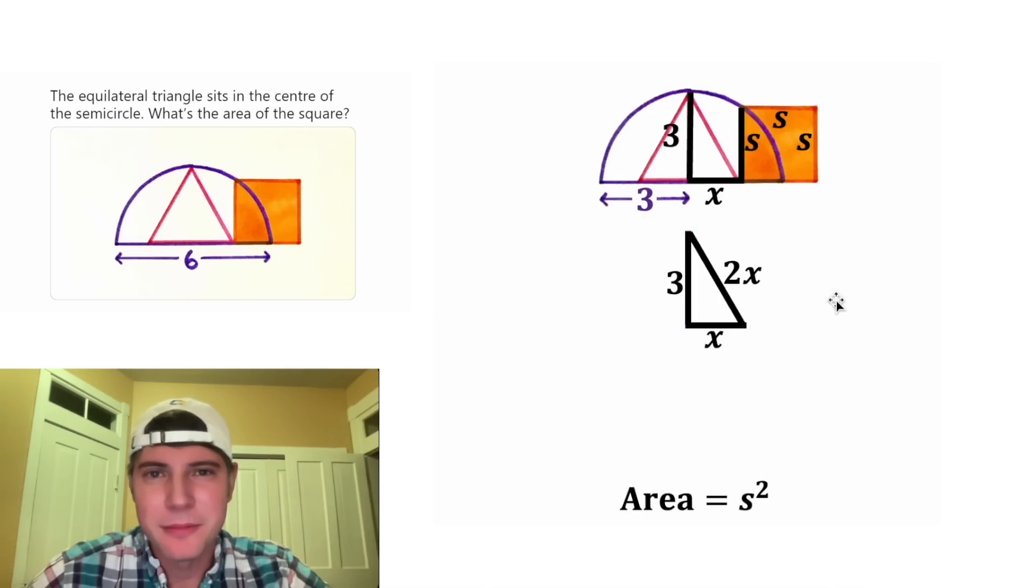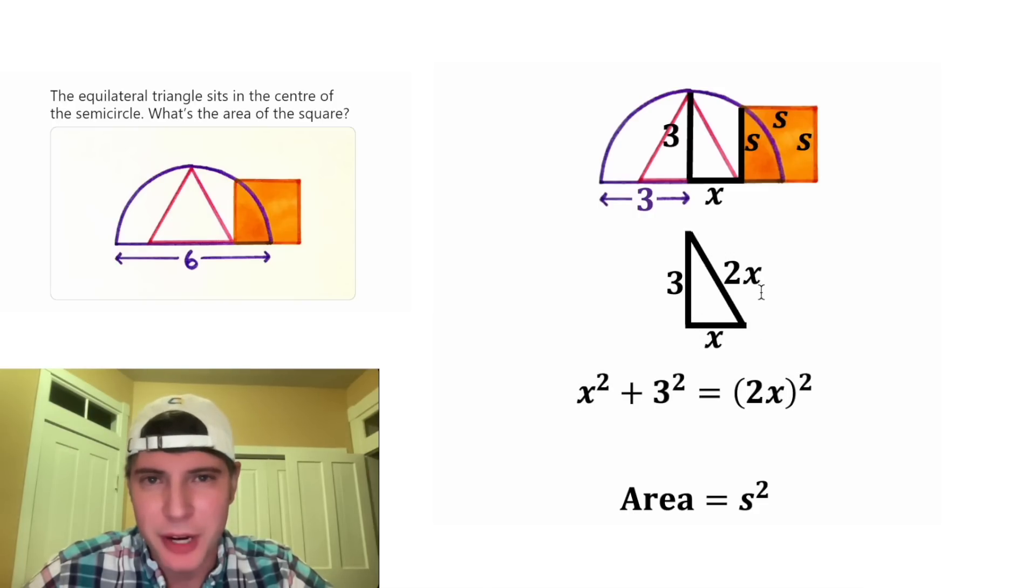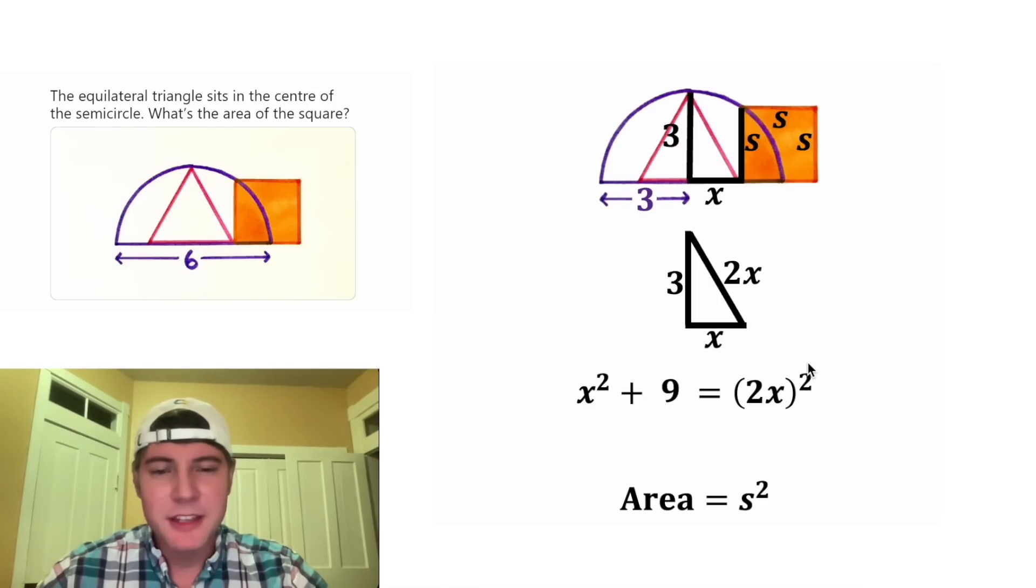Let's do Pythagorean theorem. It'll be X squared plus 3 squared is equal to the quantity 2X squared. 3 squared is equal to 9. And this exponent will distribute to both of these to give us 2 squared X squared. And 2 squared is equal to 4.